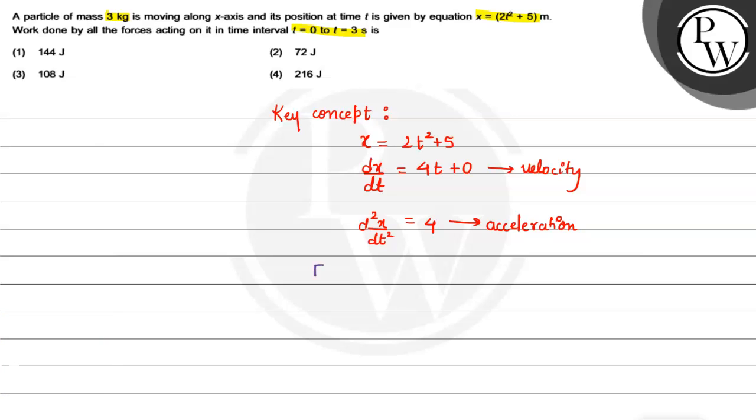So force = mass × acceleration. Force value here is mass is 3, acceleration 4, so 12N.